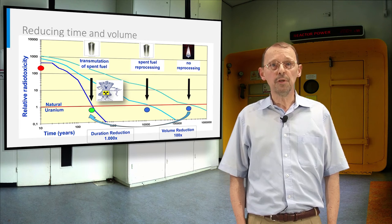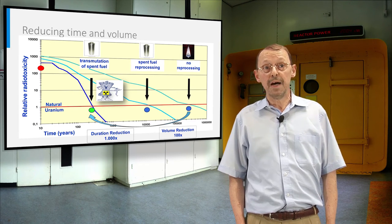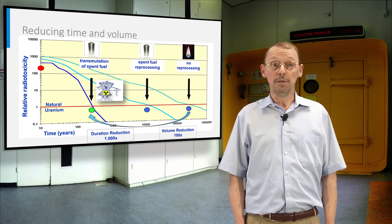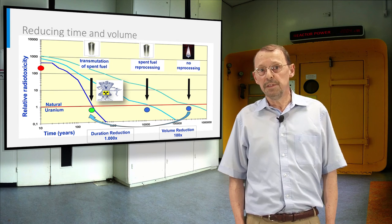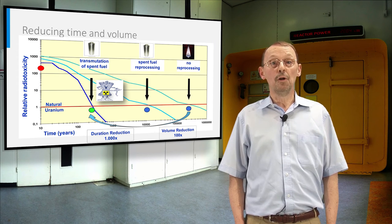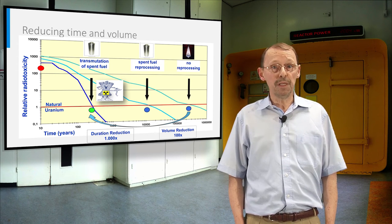In a high-flux reactor, be it a generation 4 fast reactor as presented in other videos, or in an ADS, transmutation of heavy long-lived radionuclides is made possible.